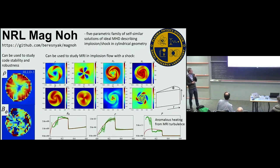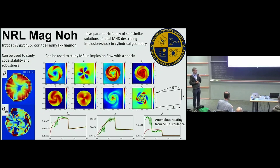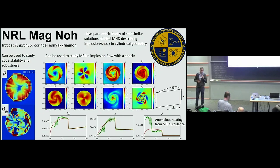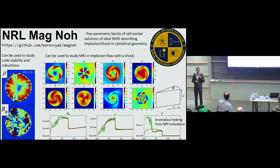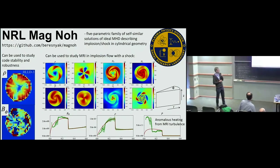If you're studying MRI, good news: most people study MRI in stationary solutions such as Keplerian flow or Taylor-Couette flow, but now you have a non-stationary solution which is unstable to MRI. This is an example of MRI development — you can see post-shock there are large perturbations growing.